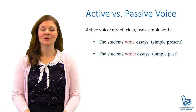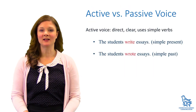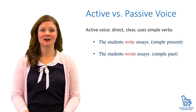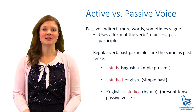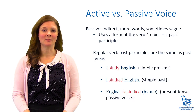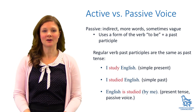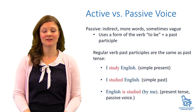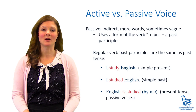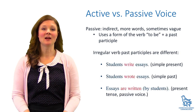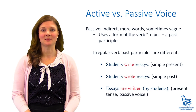Generally speaking, the active voice is simpler, more direct, and more clear, and is therefore preferred by many disciplines. Passive voice uses a be verb with the past participle of the main verb. Past participles of regular verbs are the same as their past tense forms. Irregular verbs have different past participle forms.